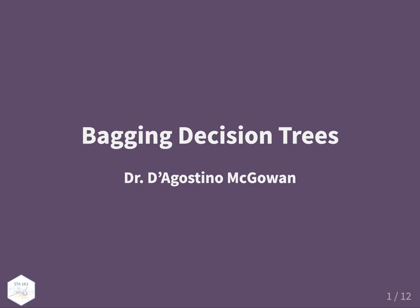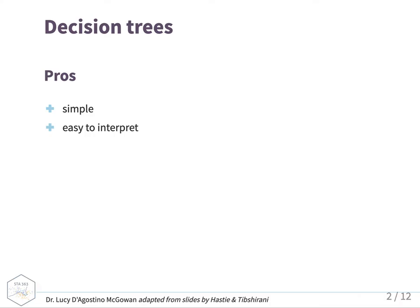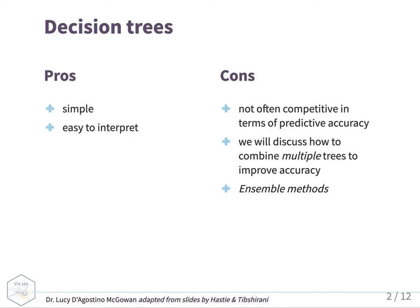Let's talk about something known as bagging — bagging decision trees. We've talked about decision trees the past couple of lectures. The pros are that they're simple and easy to interpret. But the cons are that they're not often competitive in terms of prediction accuracy. There are ways to make them more competitive by combining multiple trees to improve accuracy. These are known as ensemble methods, and bagging is one of these types of methods.